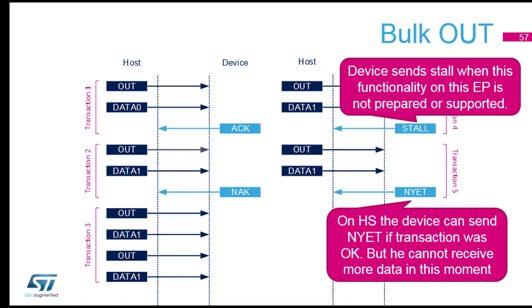Why does high speed have NYET? In high speed, imagine you prepare a huge bulk transfer and send it, but the endpoint is not ready. You've wasted all the bandwidth. When the host receives NYET, it stops sending the bulk and instead sends a ping — a small empty packet — just to ask 'are you available now?' This saves bandwidth. The purpose of NYET is to say 'I can't right now, don't take all the bandwidth,' and then the ping is used to check when it's ready to resume the full packet transfer.